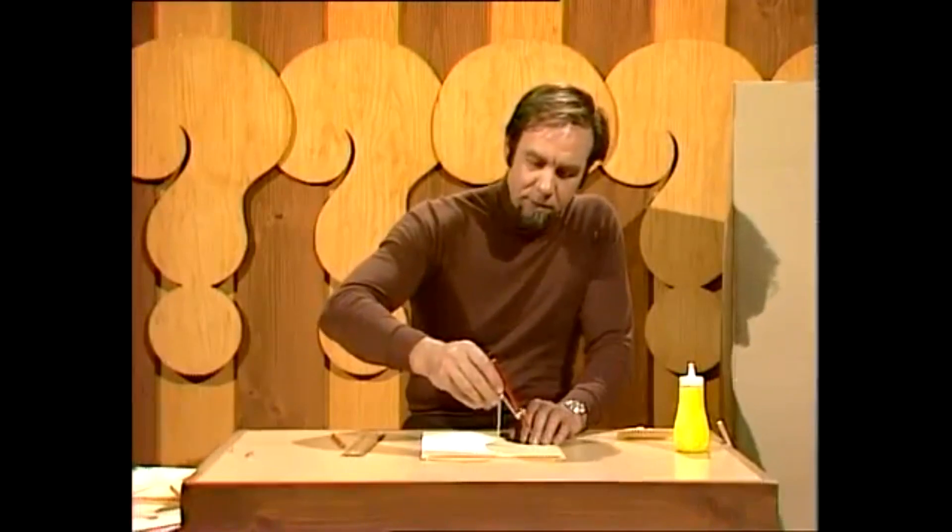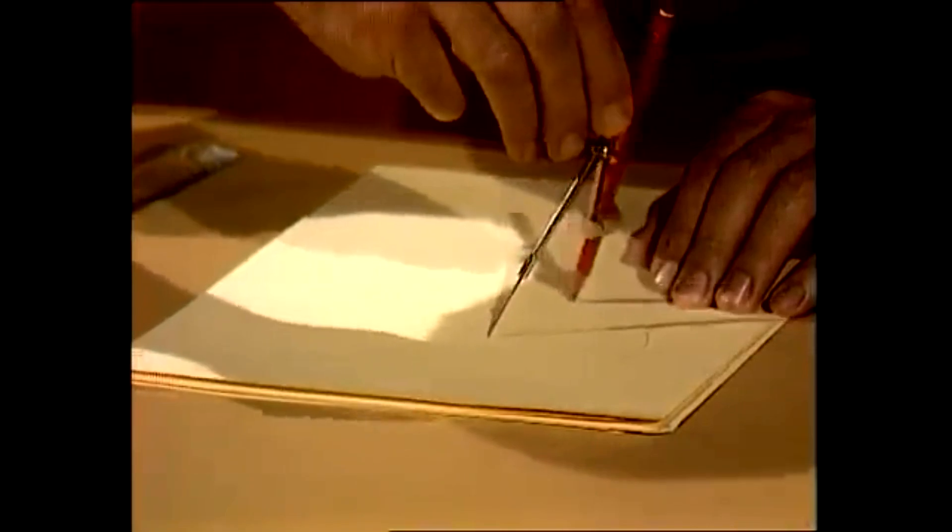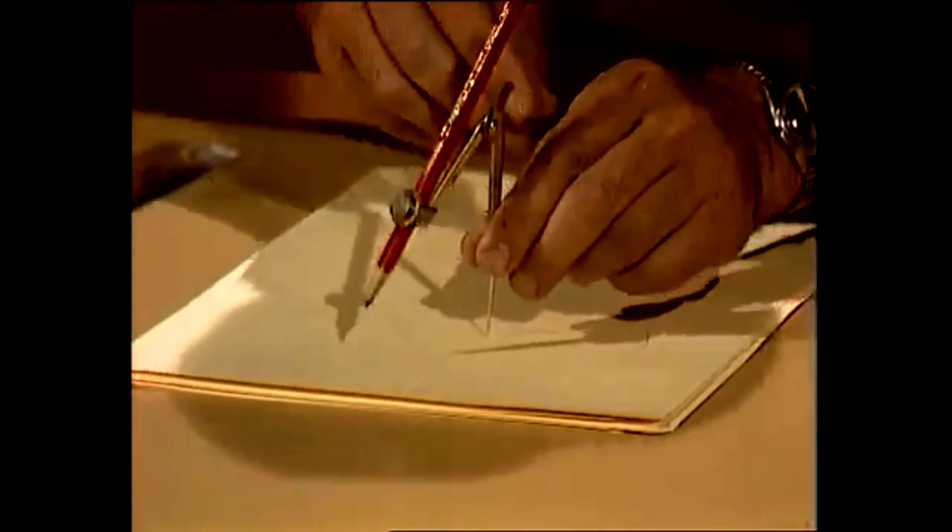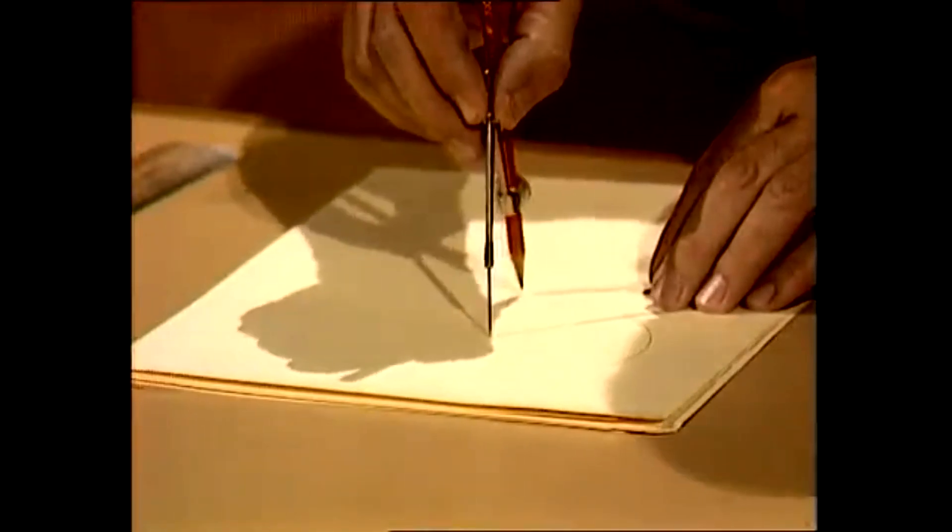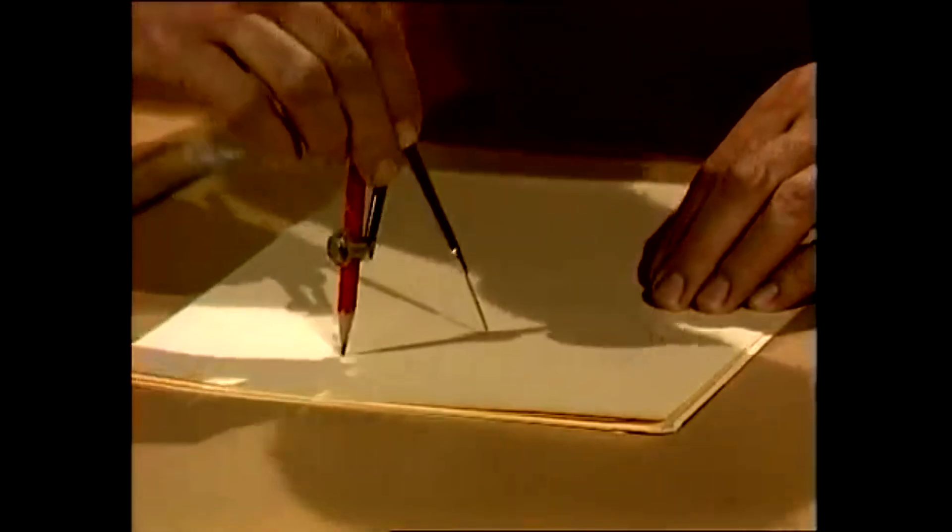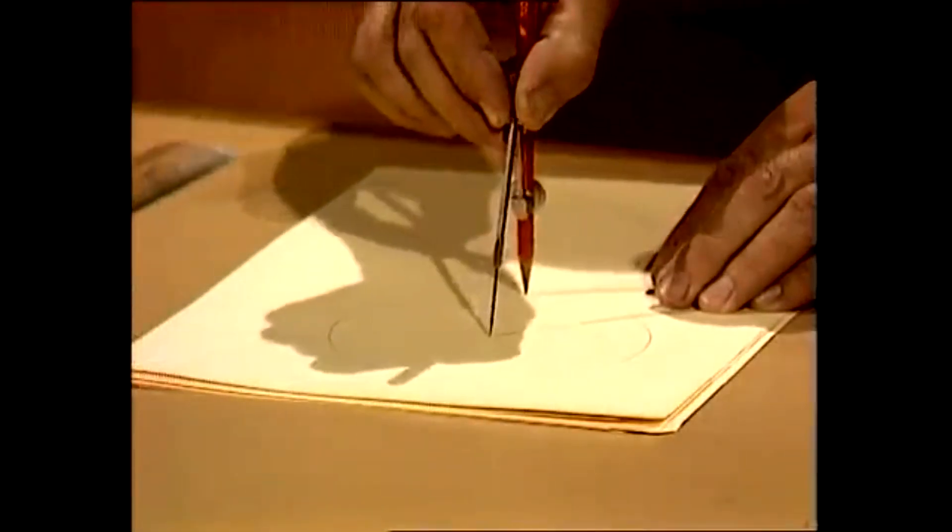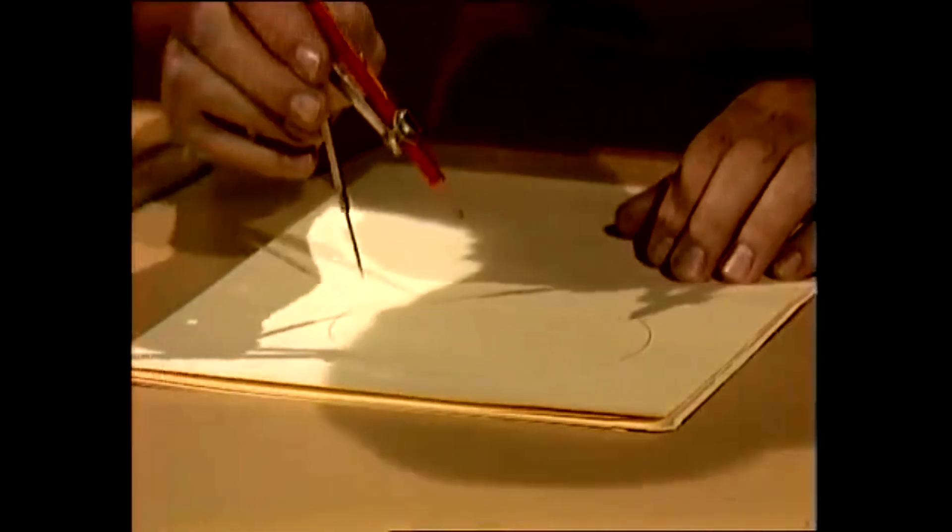First of all you need compasses and a pencil and you need to make yourself a circle. It's very important to begin with to be as accurate as possible because what we're making here is a template or a pattern from which we're going to make all the triangles that we use in the dome. If you go wrong at this stage you're going to have an error that keeps on multiplying.